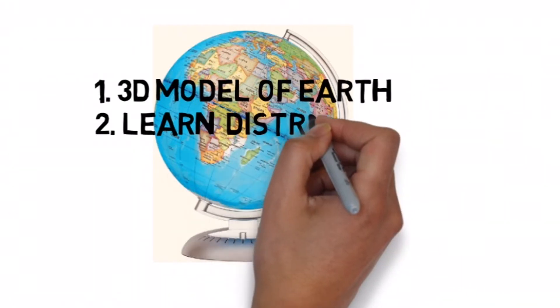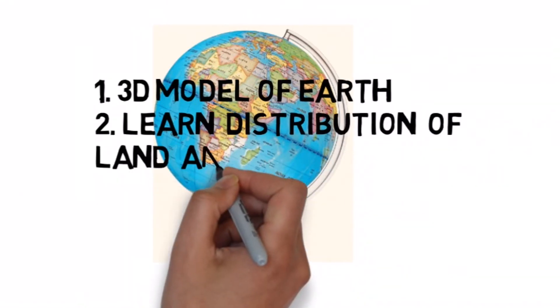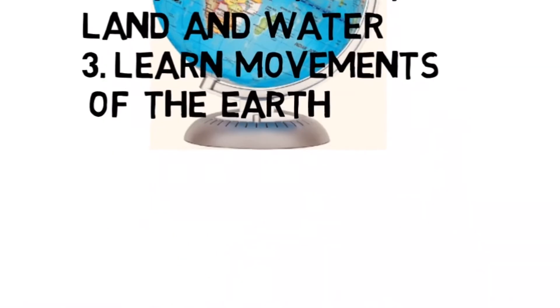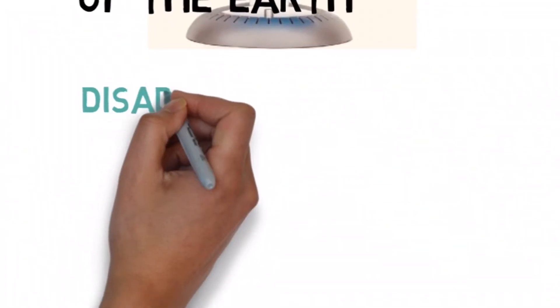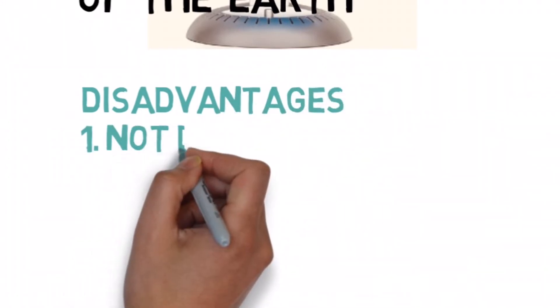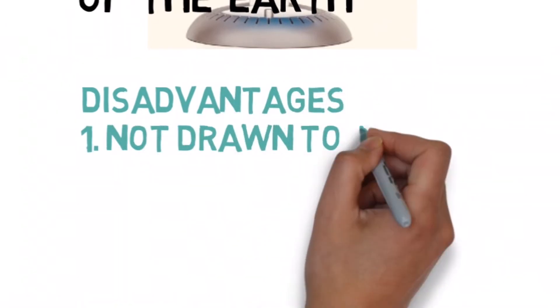We also take the help of a globe to learn about the movements of the earth. However, the disadvantages of using a globe to study are: number one, it does not show the accurate distance between places, that is, it is not drawn to a scale.